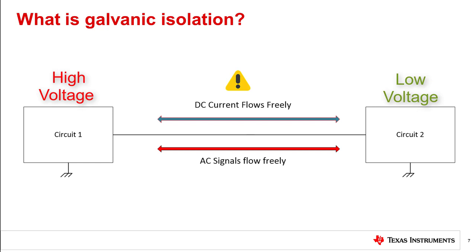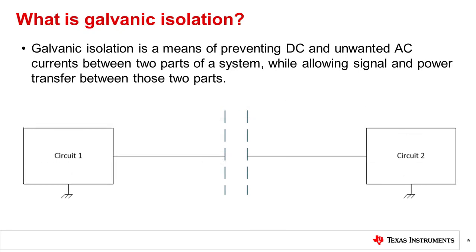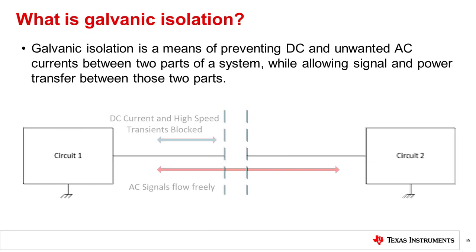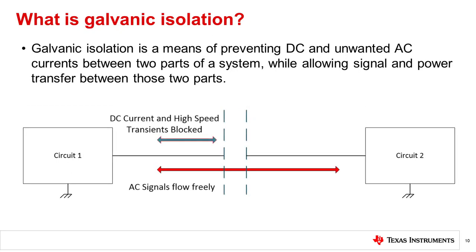In these circumstances, galvanic isolation is needed. Galvanic isolation is a means of preventing DC and unwanted AC currents between two parts of the system while still allowing signal and power transfer between those two parts. Isolators are electronic devices and semiconductor ICs that are used for isolation.